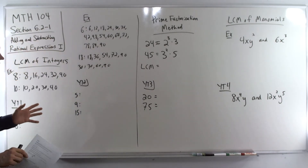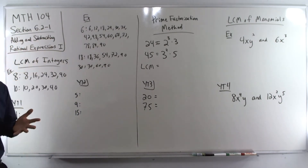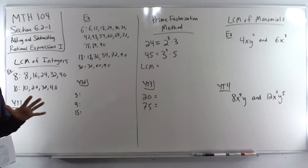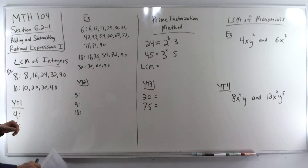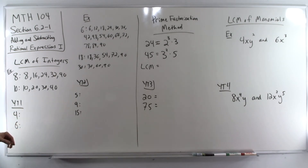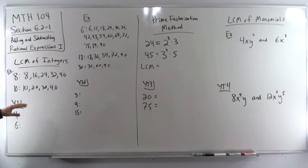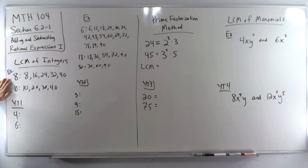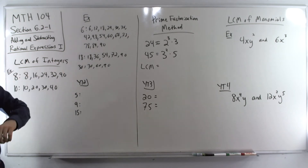In order to add and subtract fractions, we need to have a common denominator. So that means we're going to need to work on things like the least common multiple. We're going to start by finding the least common multiple of integers, and one way to do that is just by listing the multiples.